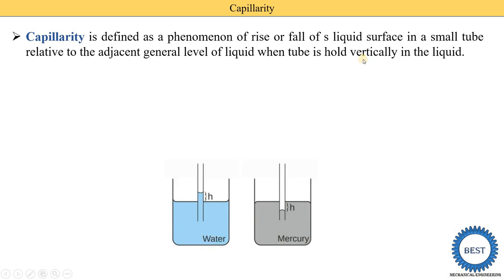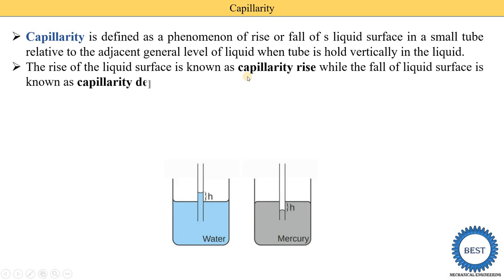Here you can see this diagram: there is one container filled with water and a small tube held vertically in the water. A small tube means the diameter of the tube is 6 mm or less than 6 mm — it is called a capillary tube. Capillary phenomena is applicable only on a small tube with diameter 6 mm or less. This capillary tube is open from both ends, with one end inserted in a liquid, and the liquid may rise or fall in the tube.